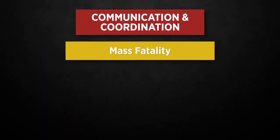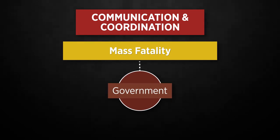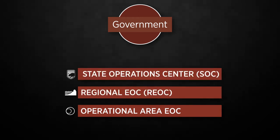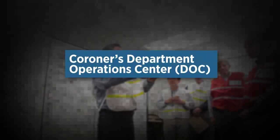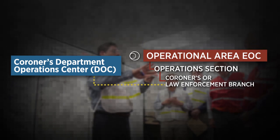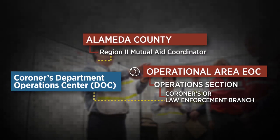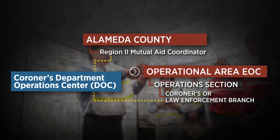Communication and coordination refers to your role as the link between government and partners who support the mass fatality operations. You will work directly with your government agency counterparts at the operational area and regional levels, the State Operations Center, or SOC, and the Joint Field Office, or JFO, where federal resource coordination occurs. In a mass fatality incident, the coroner will likely open a Department of Operations Center, or DOC, to coordinate coroner responsibilities. The DOC links to the operational area EOC for resource support through the operations section's coroner's or law enforcement branch. The coroner will also coordinate with the Region 2 Mutual Aid Coordinator in Alameda County to ensure adequate resources are available.